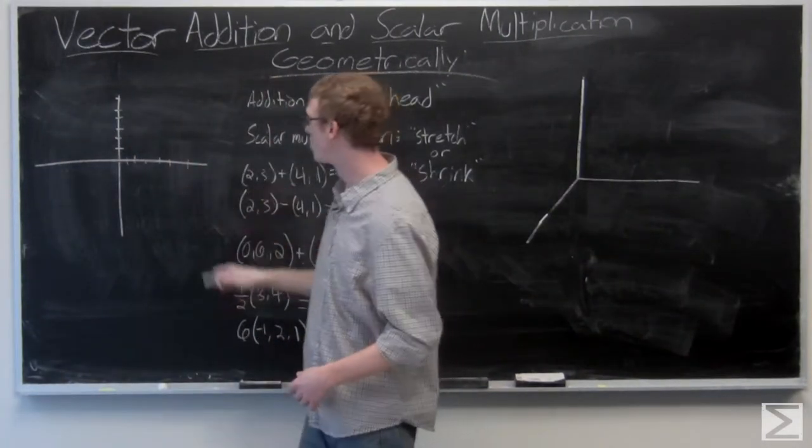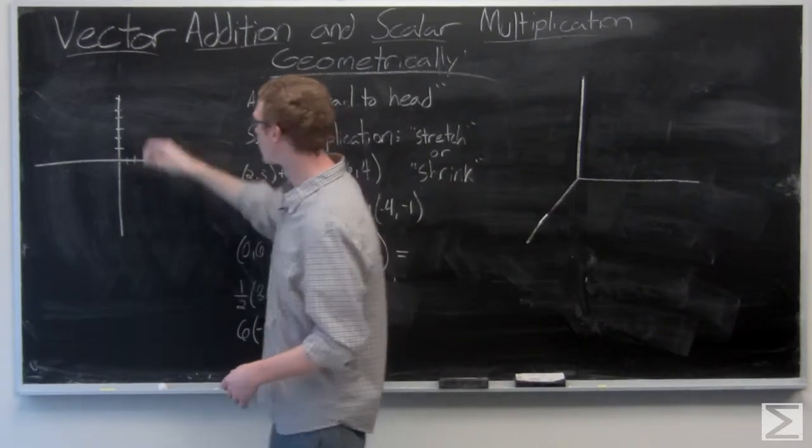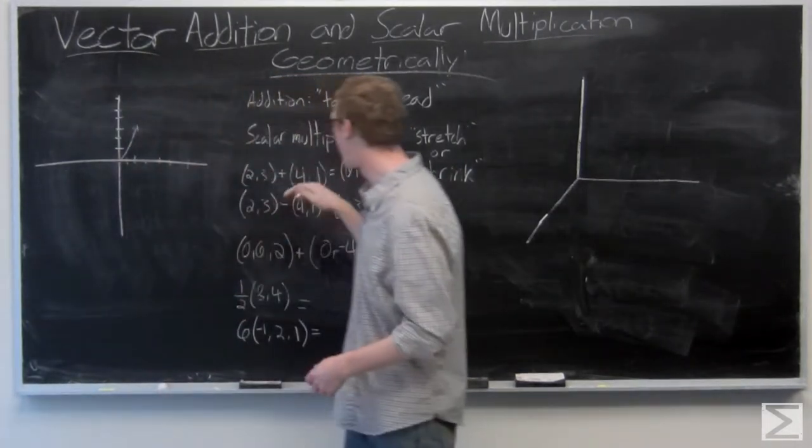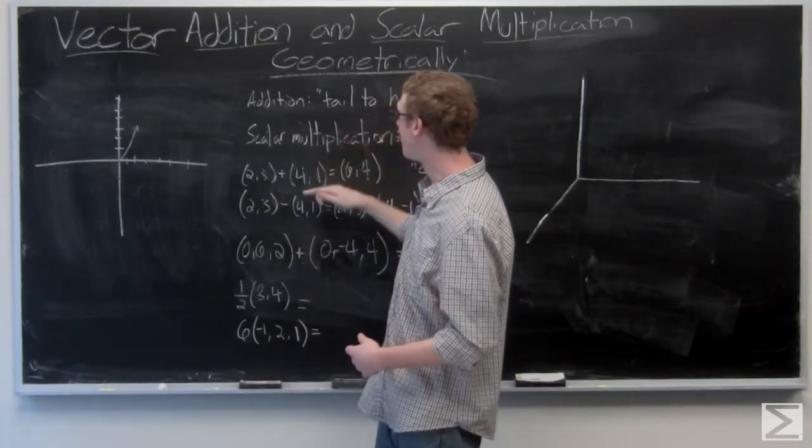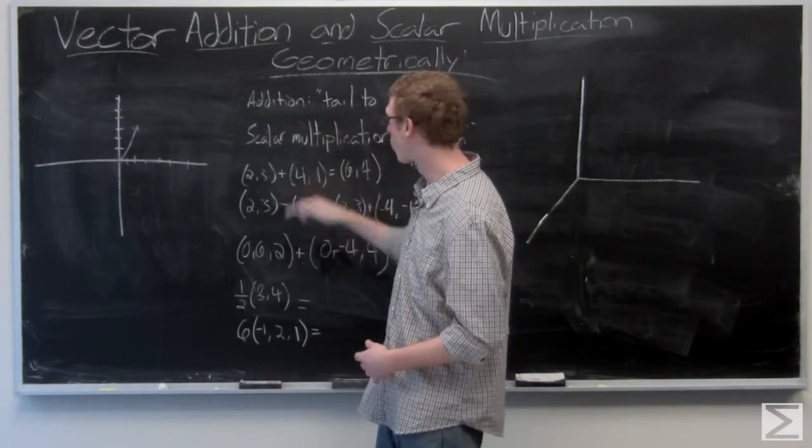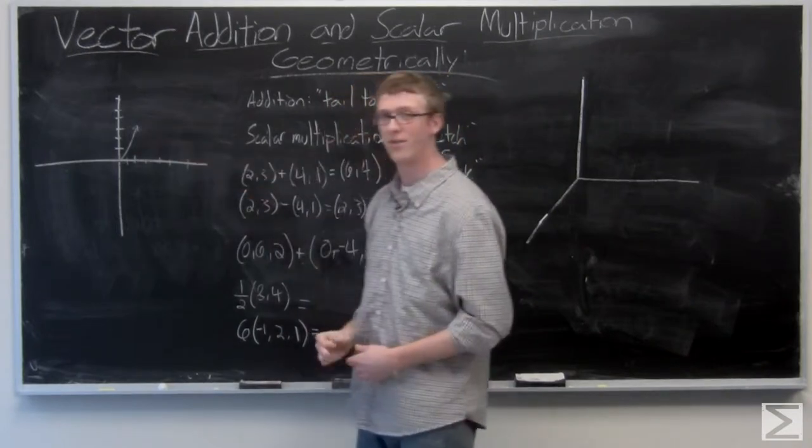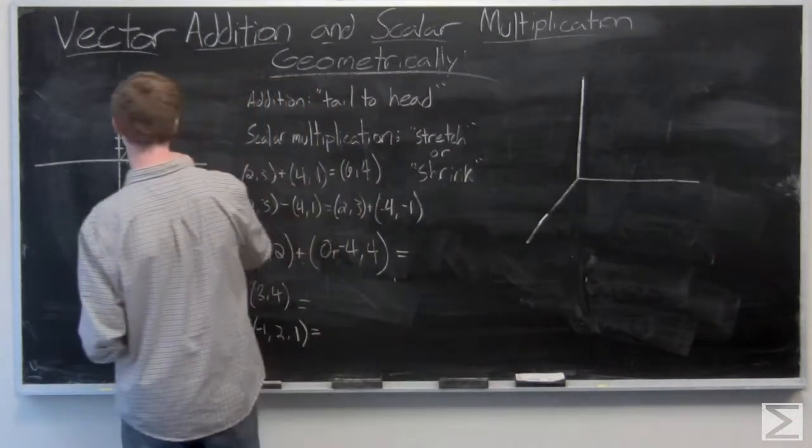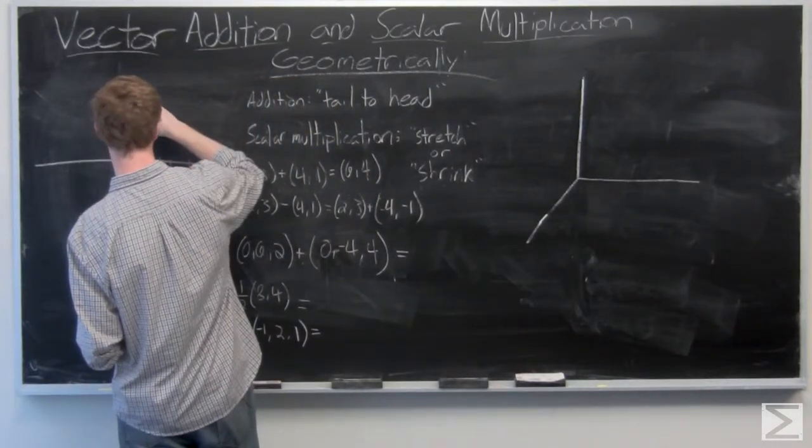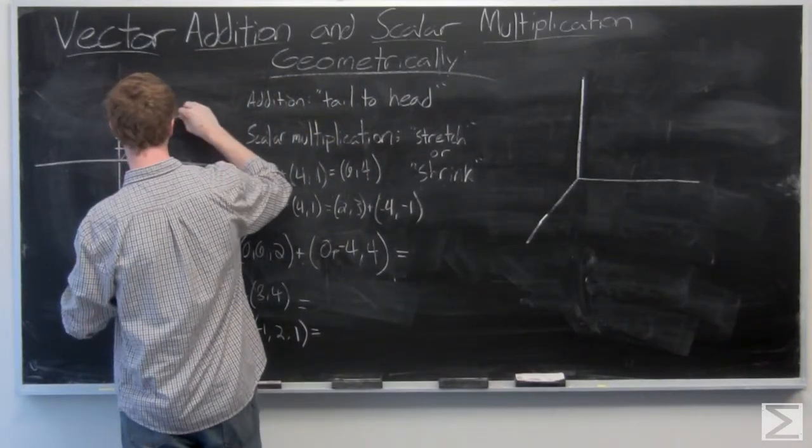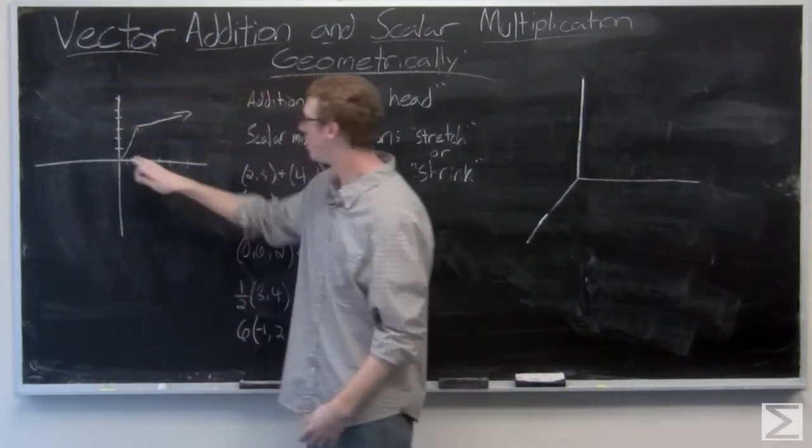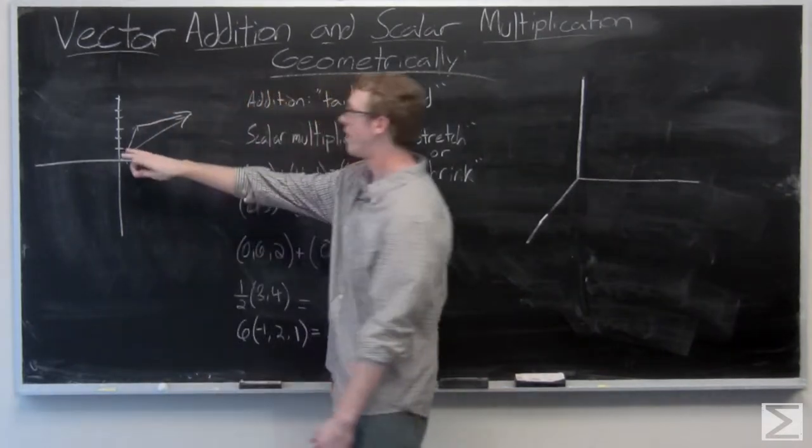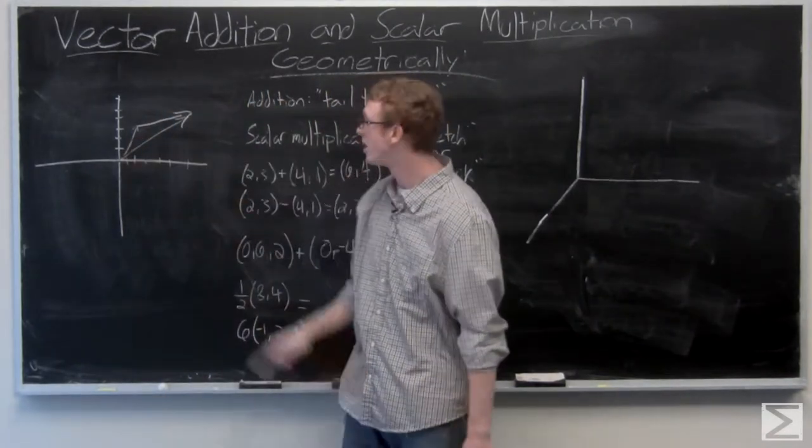So this is our plane. We have a vector (2,3)—2 to the right, 3 up. And now we're adding the vector (4,1), so we're going to add the tail of the vector (4,1) to the head of the vector (2,3) to get the resultant (6,4). So our vector (6,4) looks like this, and we can see that we had addition to get there.